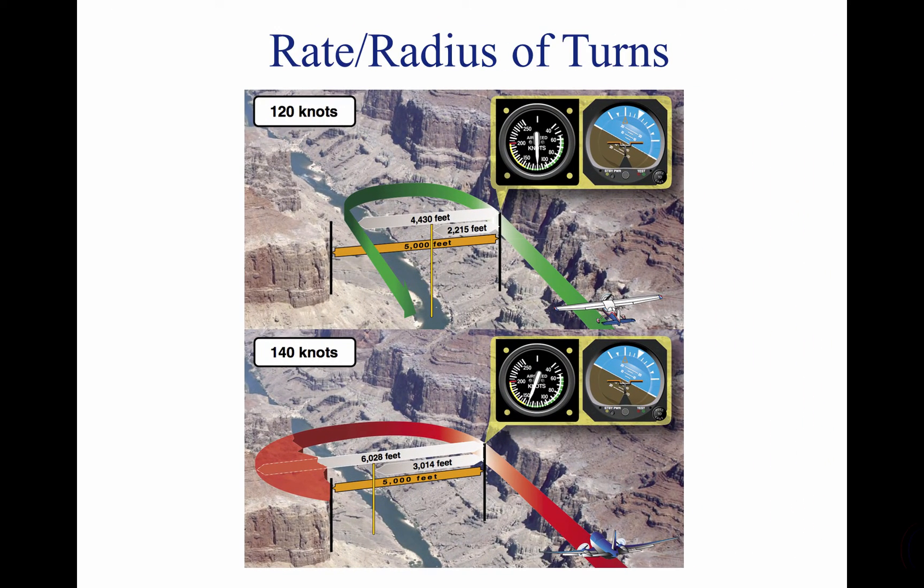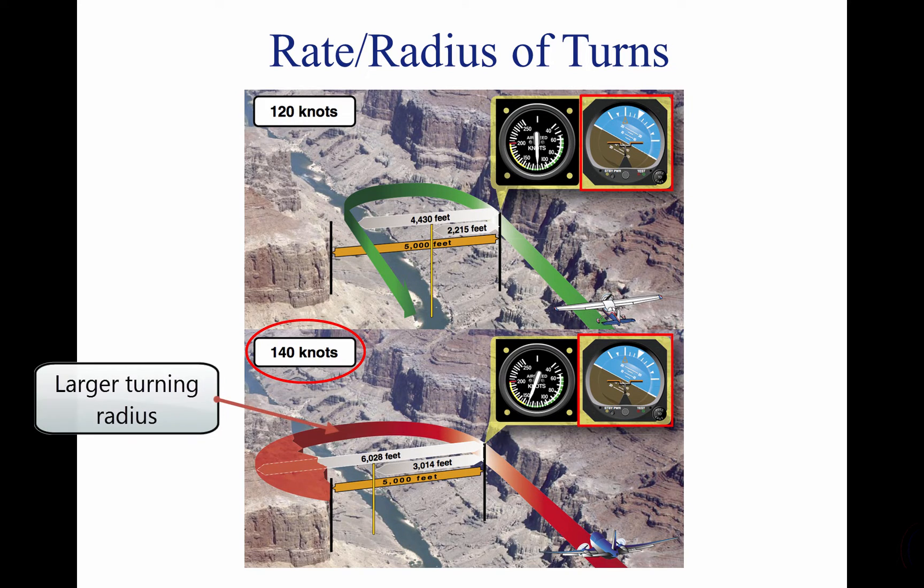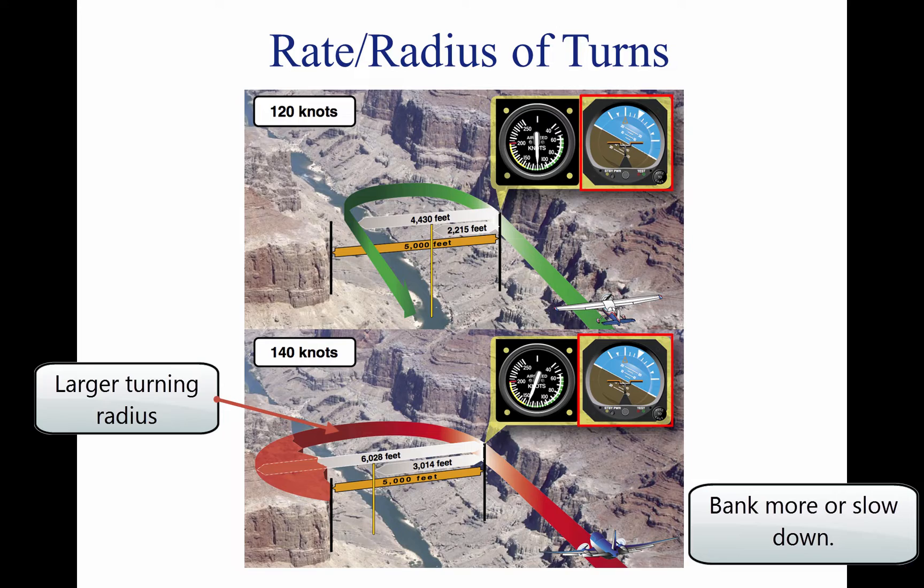An airplane's bank angle and speed affect how quickly and in what distance it can turn. In the above example, two planes enter a canyon. They both bank the same amount, but one aircraft is traveling 20 knots faster than the other. The result is a larger turning radius for the faster aircraft. That aircraft will not be able to make it out of the canyon traveling at its given speed. The way to correct this would be to either bank more or to slow down to shorten the radius of the turn.